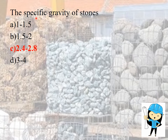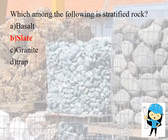The next question concerns the specific gravity of stones. The specific gravity of stone is 2.4 to 2.8, and generally it is greater than 2.7. The next question asks: which among the following is a stratified rock? The answer is clay. Basalt, granite and trap are known as un-stratified rocks.